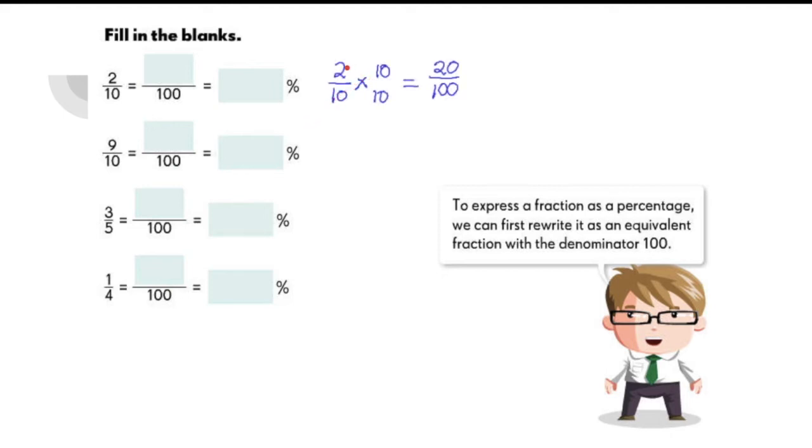So to change two tenths with a fraction whose denominator is 100, we just need to multiply it by 10. 2 times 10 will give us 20, 10 times 10 is over 100. So here, we can say that 2 tenths is equal to 20 over 100 or simply 20%.